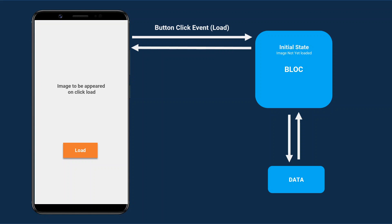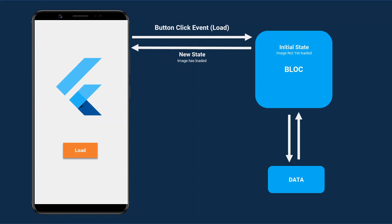The BLoC creates a new state based on the business logic and the event passed to it. There is a button click event, and on this event we need to load a new image from the data provider. Based on the business logic, the BLoC receives the event and creates a new state — 'image has loaded' — and you can see the new image on screen. The BLoC component also has a mapping function which maps the event to a new state.